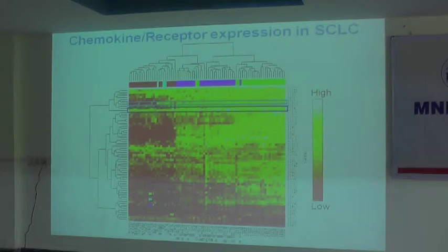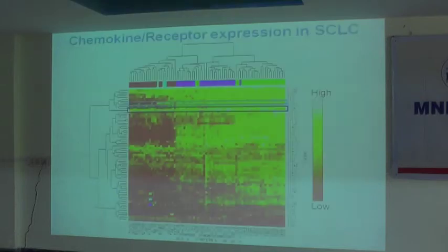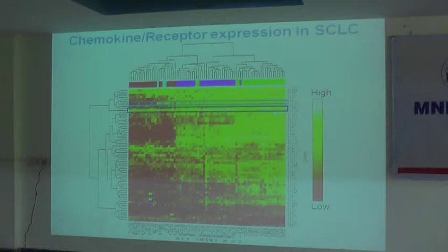We extracted all kinds of chemokine and chemokine receptor data and looked at what happens to all of them in small cell lung cancers. What we observed is that small cell lung cancers uniformly express CXCR4, but not much of the other chemokine receptors. This suggested that small cell lung cancers have specifically overexpressed this particular protein.